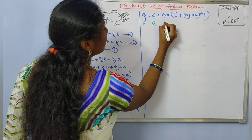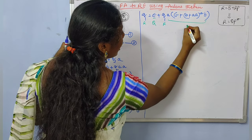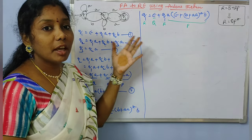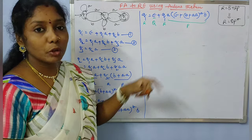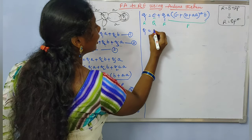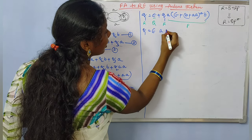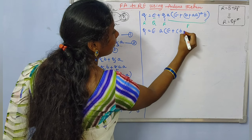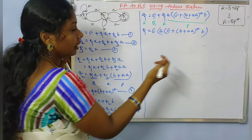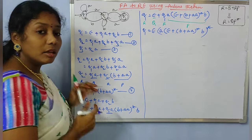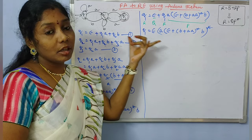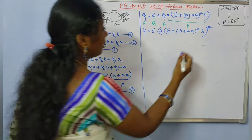Here epsilon is our Q, and A·(epsilon + B + AA*·B) is our P. So according to Arden's theorem, Q1 = epsilon·(A·(epsilon + B + AA*·B))* = (A·(epsilon + B + AA*·B))*. Let us say this is equation 5, the simplified version for state Q1.